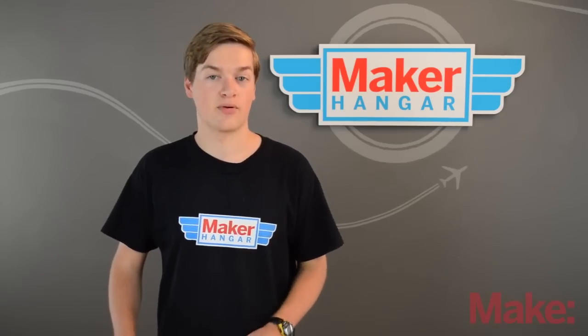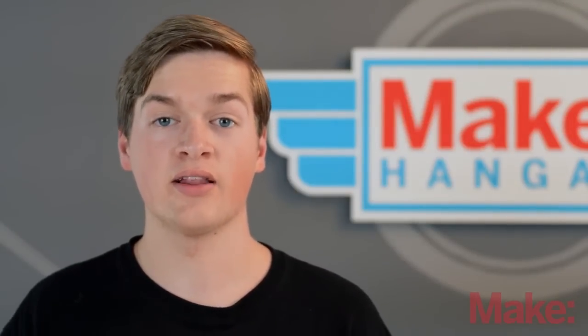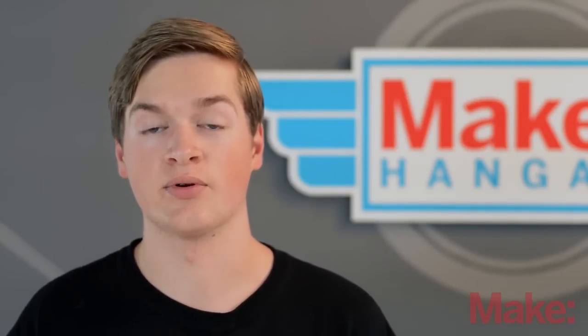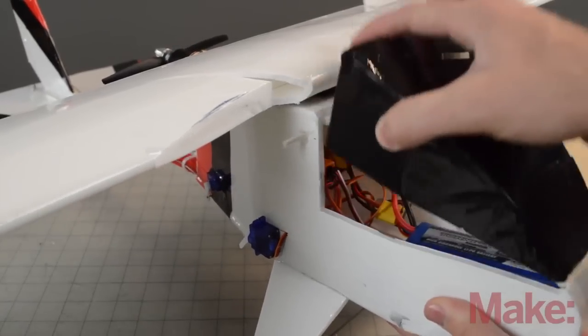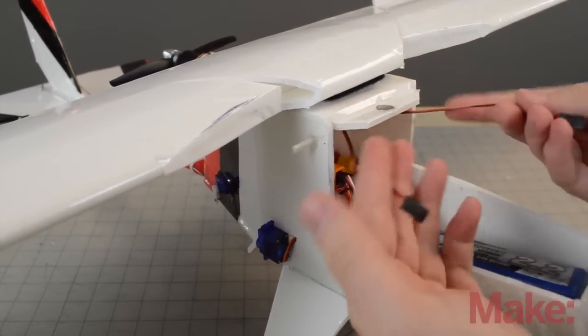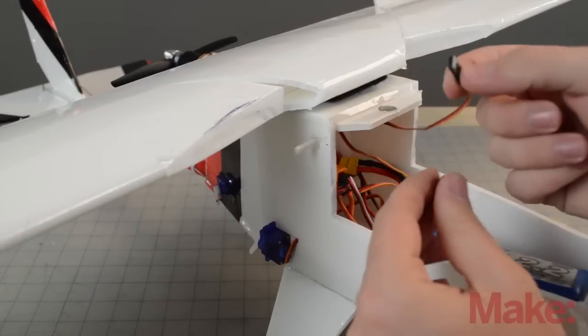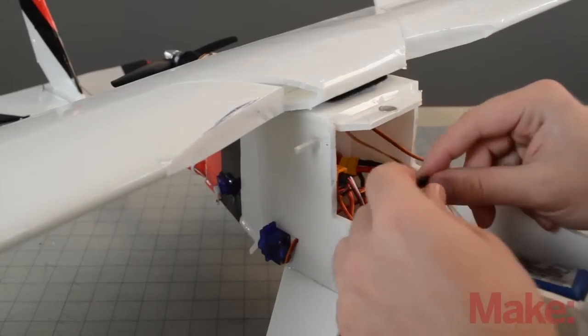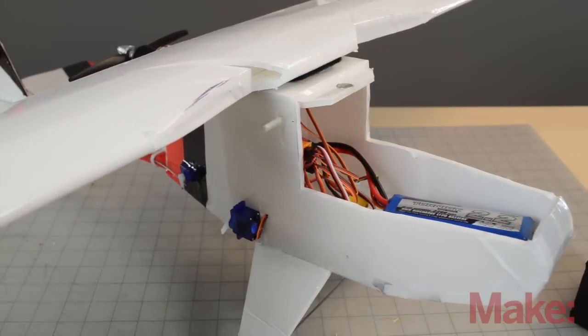Now we're going to program flapperons onto your airplane. These allow you to slow down your plane but still have aileron control without having to add a separate control surface. So flapperons is a mix between the ailerons and the flaps to slow your plane down while it's coming in for a landing. Now the way that we set this up is I've just put on the wing and we have the two servos coming off of it right here. We're going to plug one of them into the aileron port and the other one into the auxiliary port on the receiver.